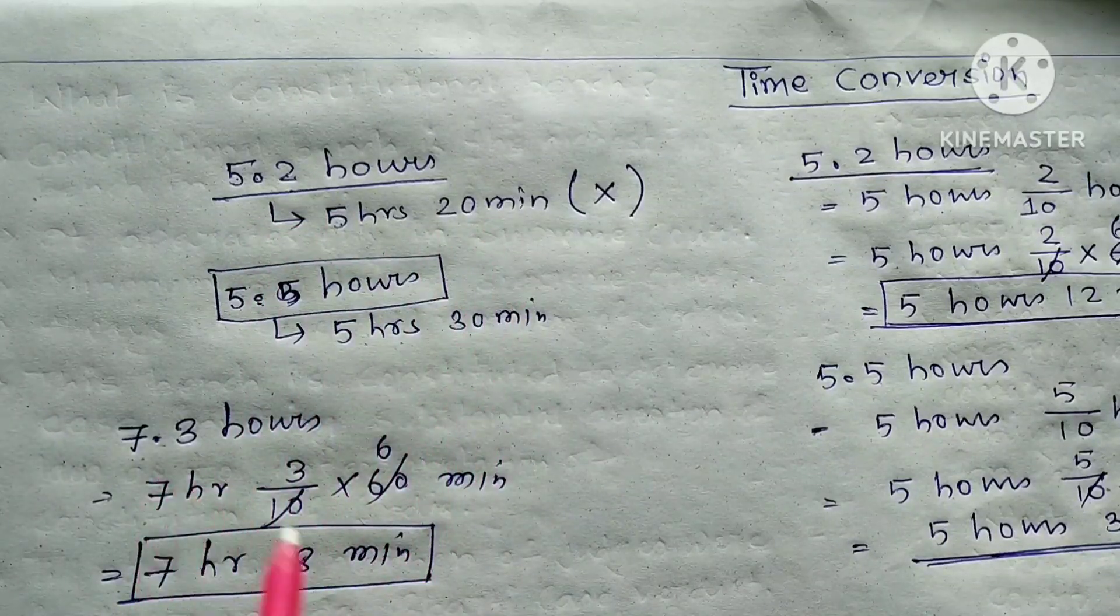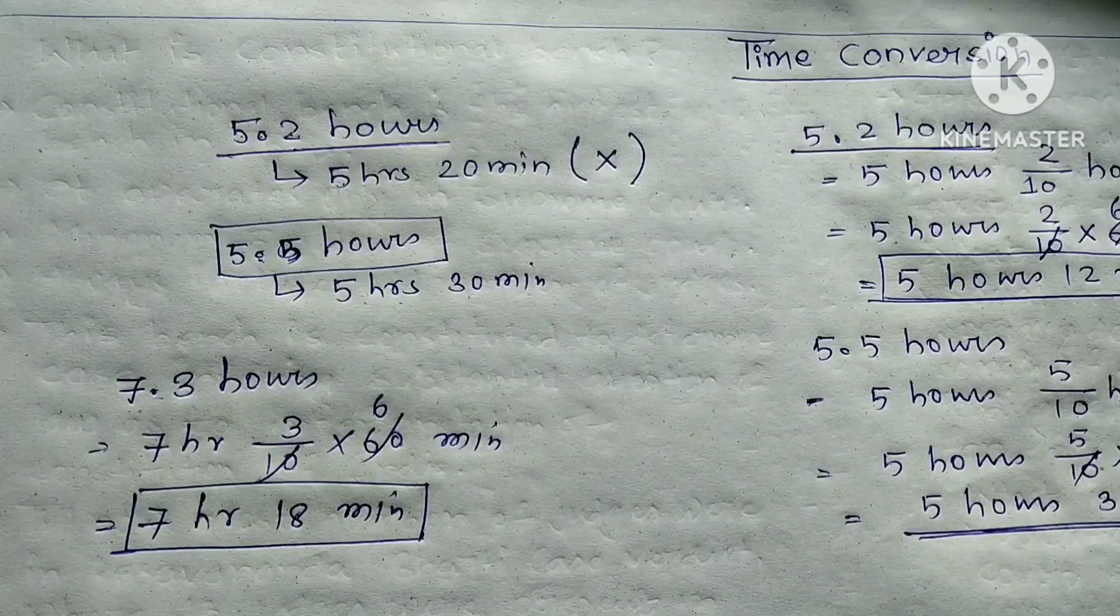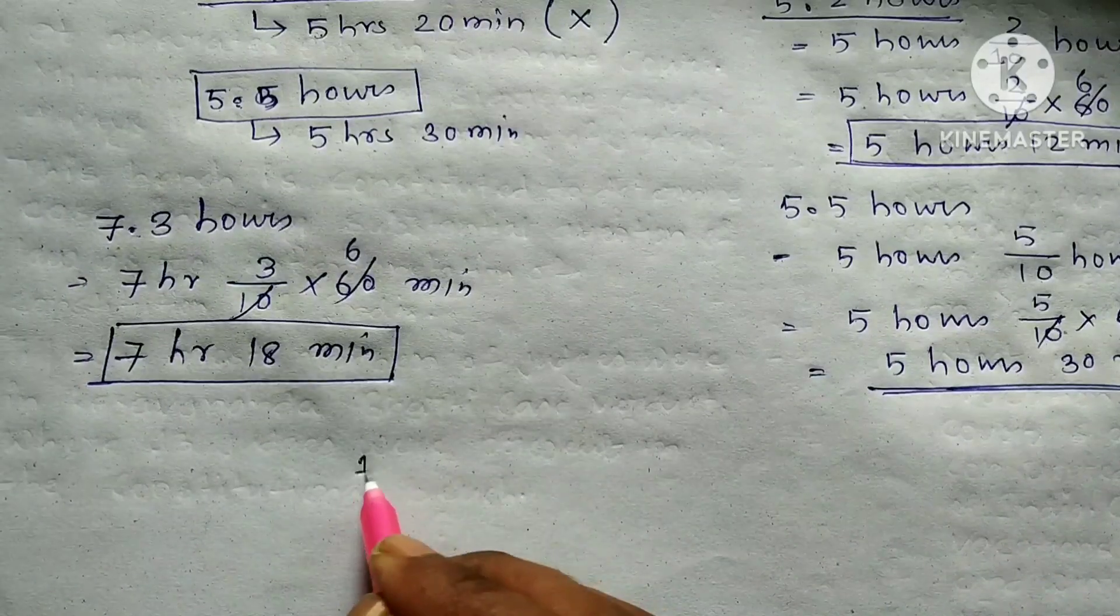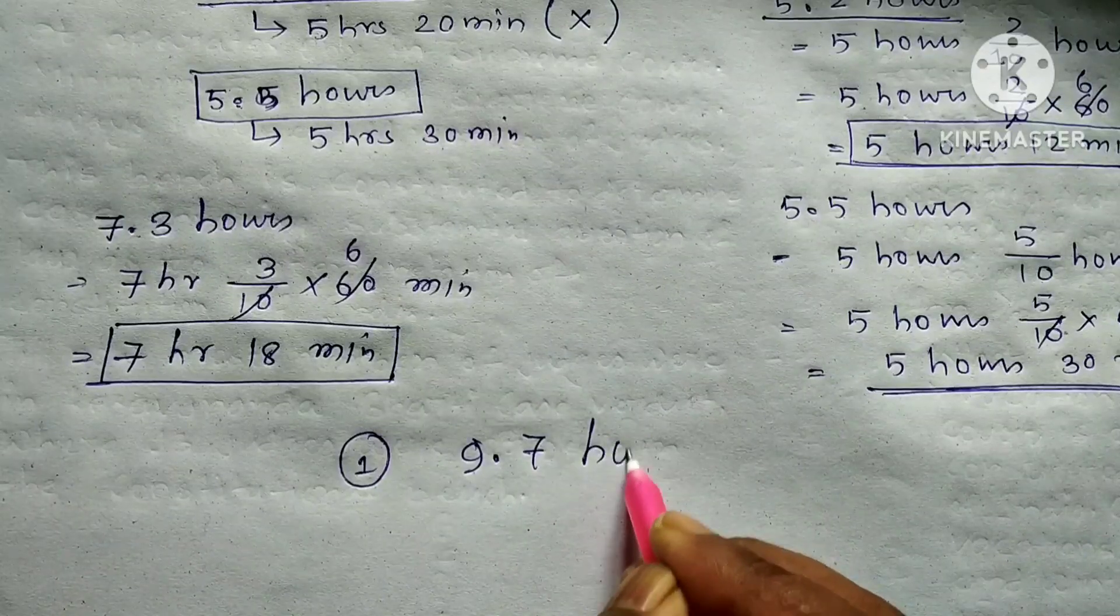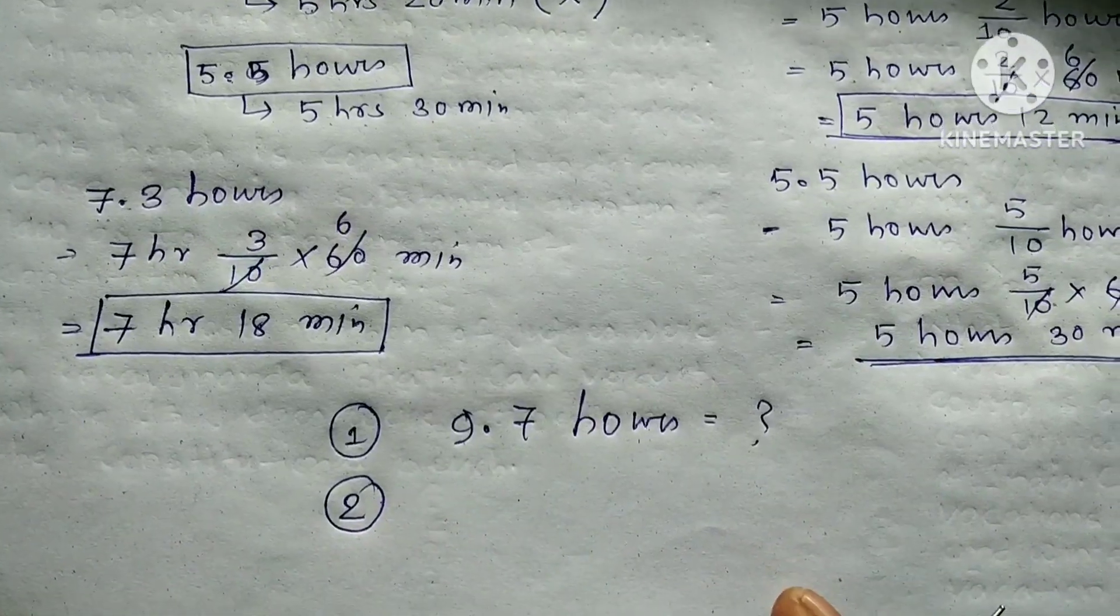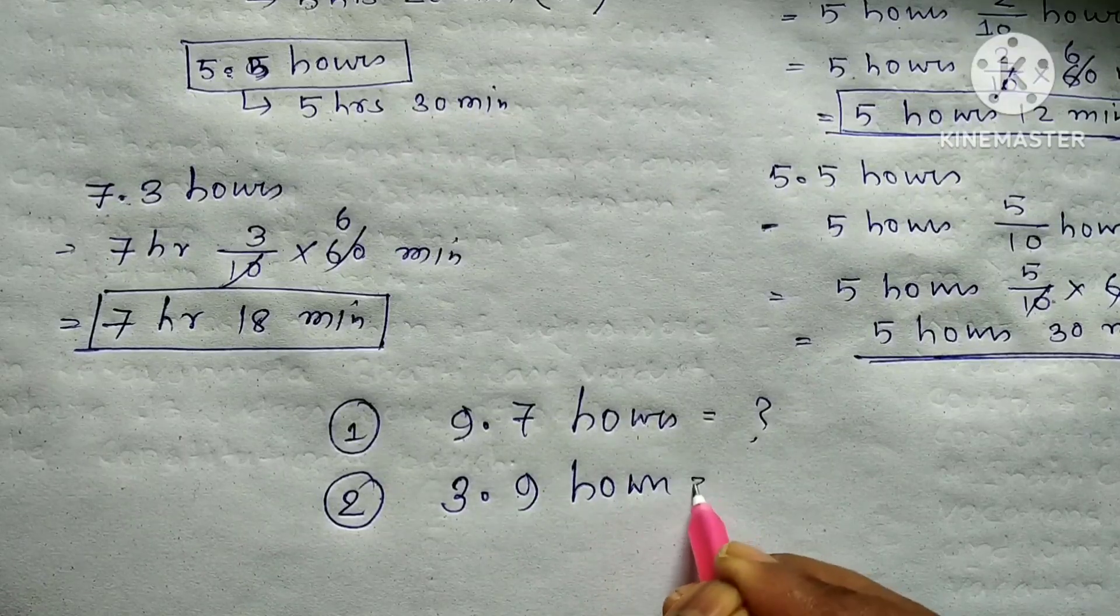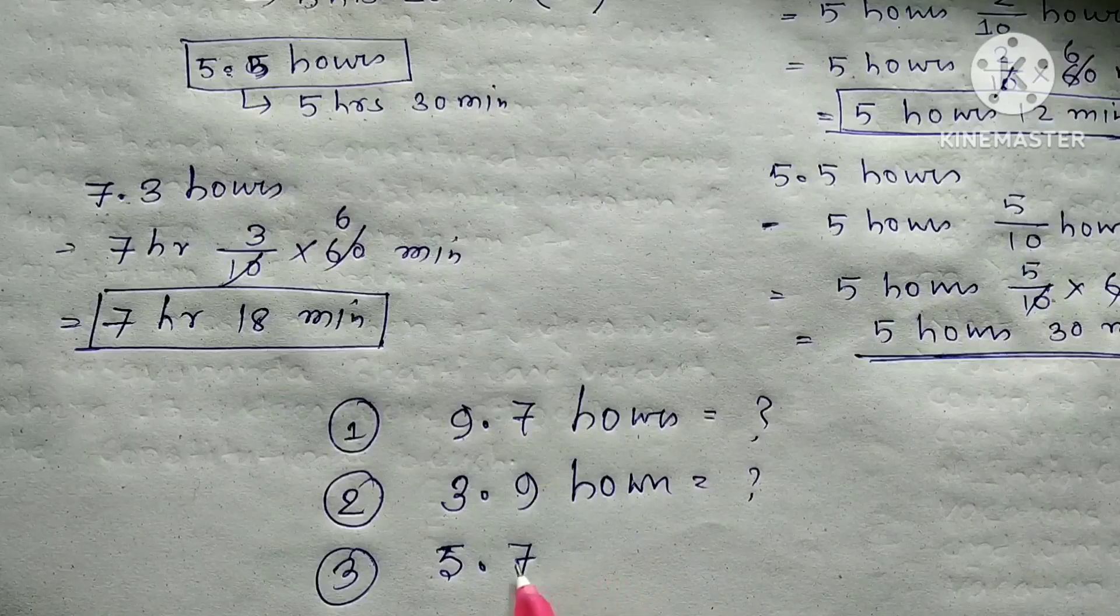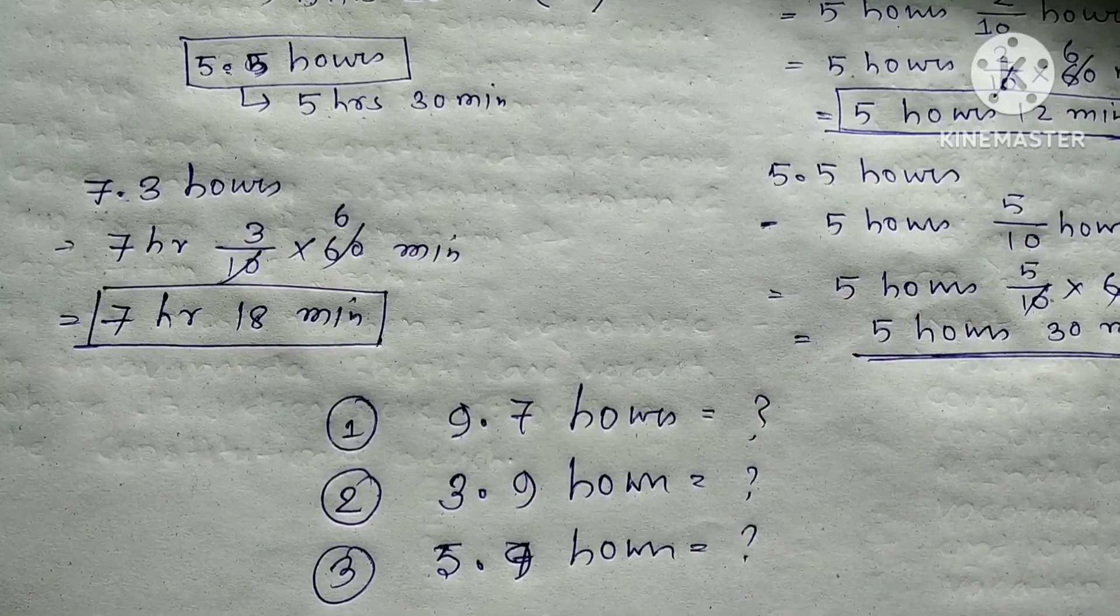For 0.2, that equals 20 minutes. For 0.3, that equals 30 minutes. This is the total calculation method. Please let me know in the comments if you have any questions.